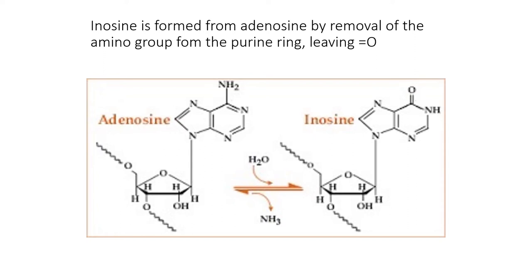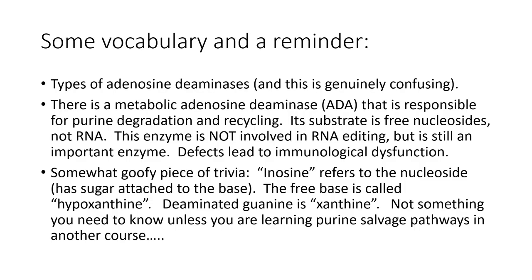There are different types of adenosine deaminases, and it's important not to confuse them. There is a metabolic adenosine deaminase (ADA) responsible for purine degradation and recycling in the purine salvage pathway; its substrate is free nucleosides, not RNA, so it is not involved in RNA editing. Defects in this enzyme lead to severe immune system dysfunction. Don't confuse this metabolic ADA with the ADAR enzymes — adenosine deaminases acting on RNA — which we'll discuss next.